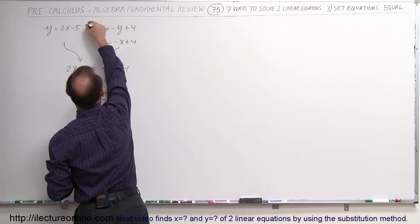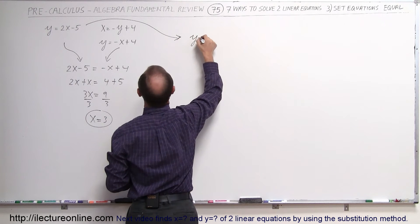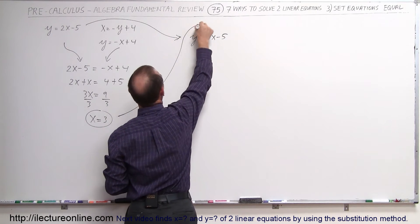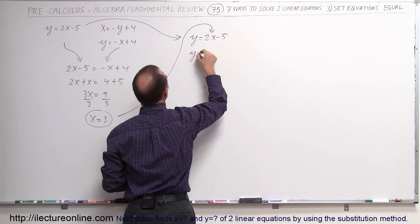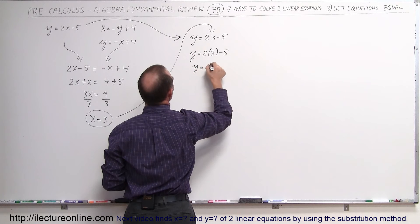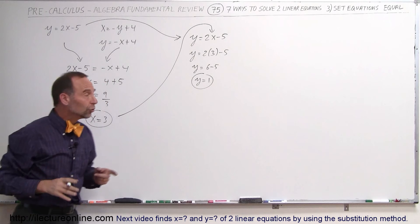So I can then take the second equation, or in this case the first equation, that says y is equal to 2x minus 5. And then plug this value in for x, we get y is equal to 2 times 3 minus 5, y is equal to 6 minus 5, or y is equal to 1. There's the y coordinate of the solution.